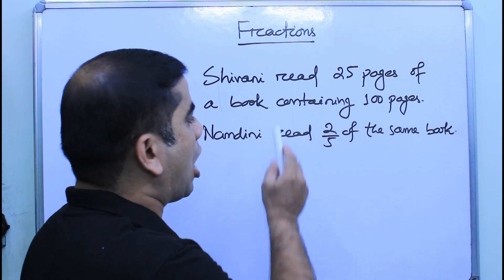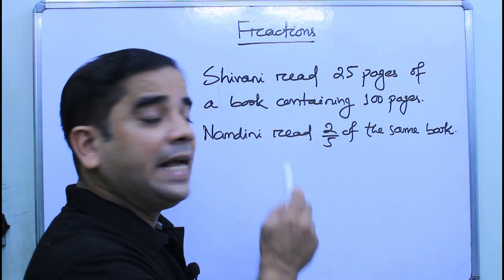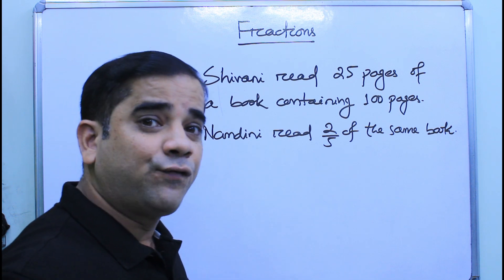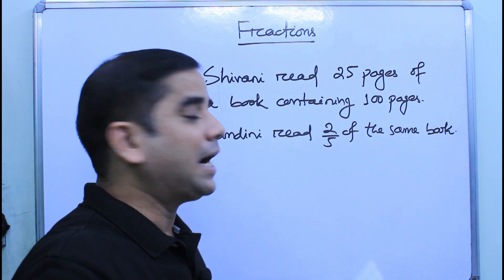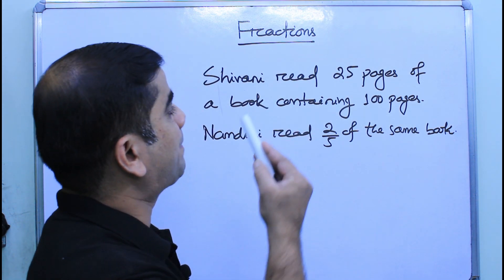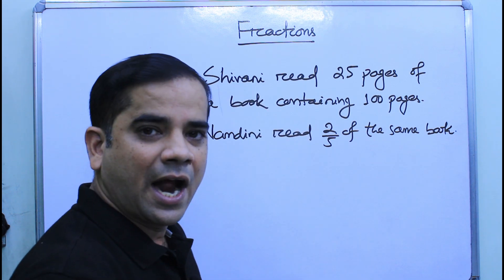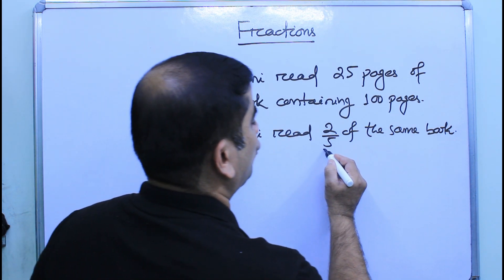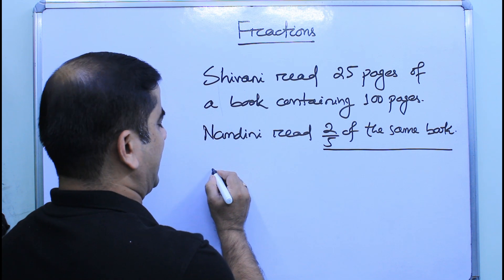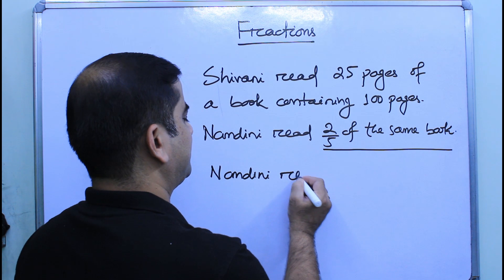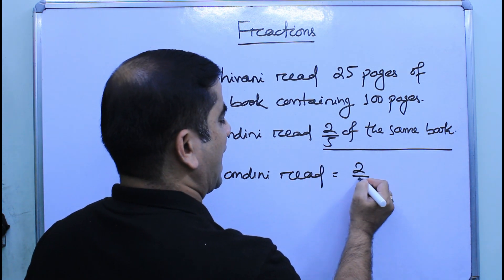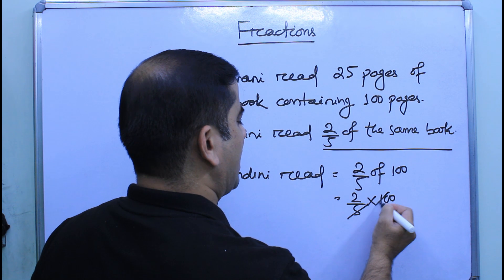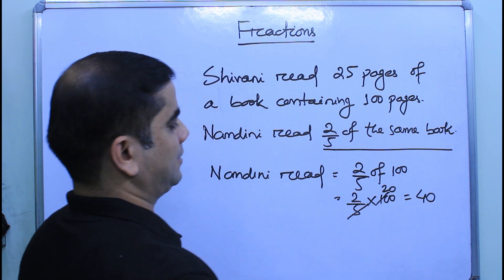We don't know how many pages Nandini read out of 100 pages, but it is given in fractional form. If we can find the number of pages Nandini read, we can compare between the two and find who read less. Since Nandini read two-fifths of the same book, we calculate: two-fifths of 100, that is two-fifths into 100, which equals 40 pages.